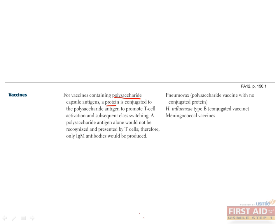This is how vaccines for Strep pneumoniae (the Pneumovax vaccine), H. influenzae type B, and Neisseria meningococcus have all been developed.